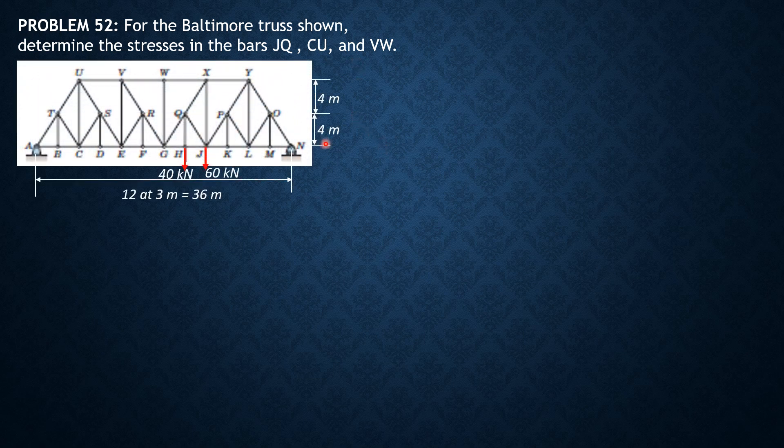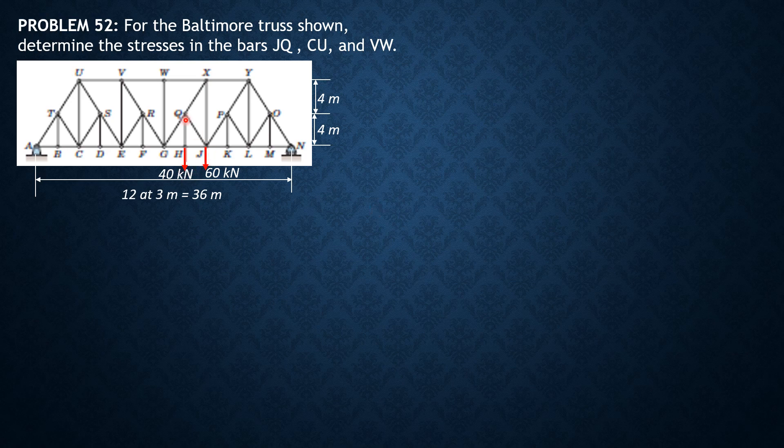That's the figure. We can determine stress of JQ by first looking at joint H, then summation forces Y, then we can find SHQ which is also 40 kilonewtons. So SHQ, the stress in HQ equals 40 kilonewtons tension.